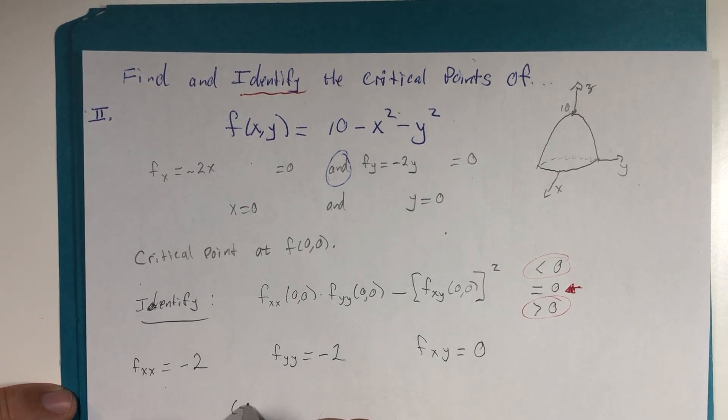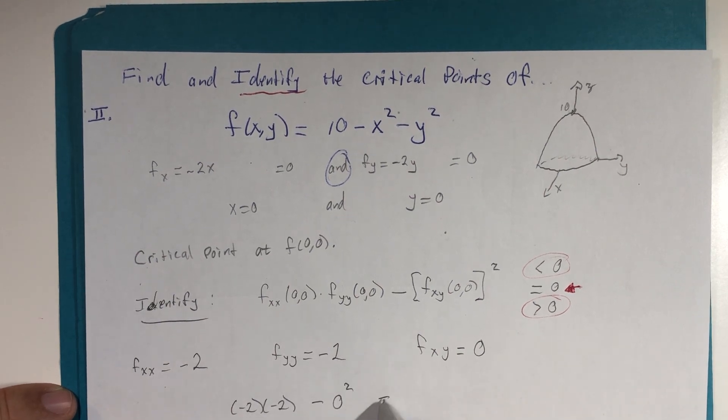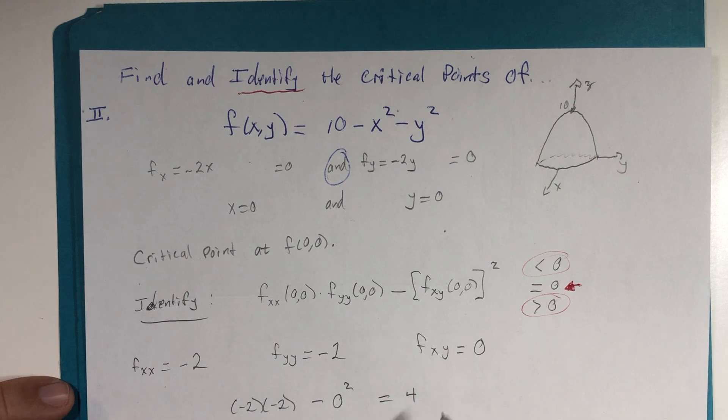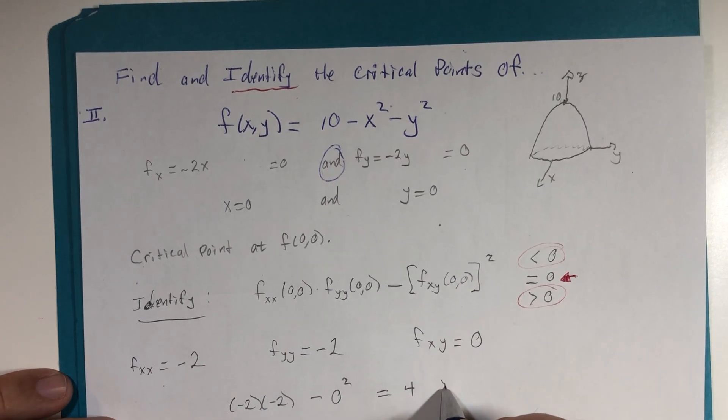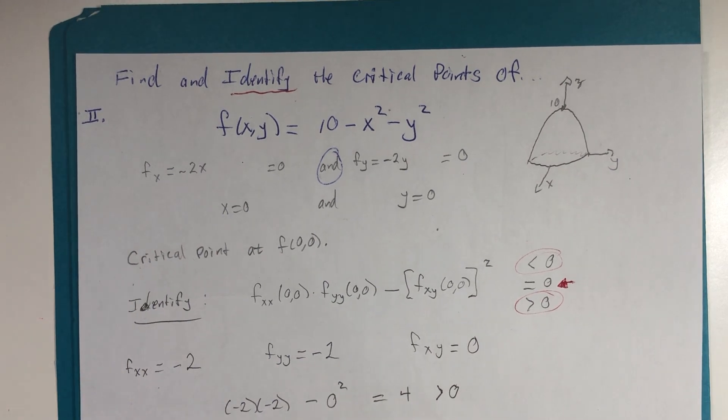So we'll have negative 2 times negative 2 minus 0 squared. This is going to be the number 4. We're not really as concerned about this number, but we are concerned that it is greater than zero. Let me switch papers again.